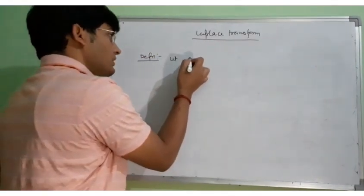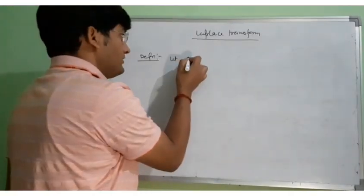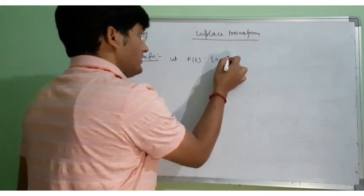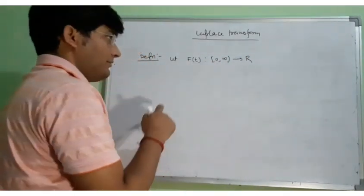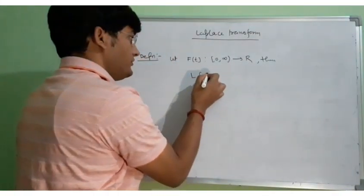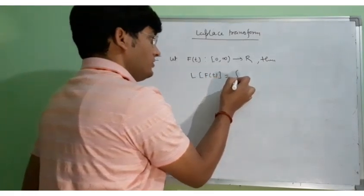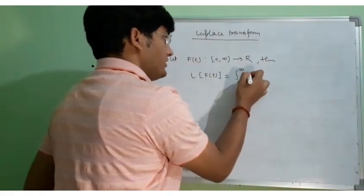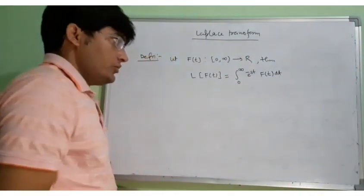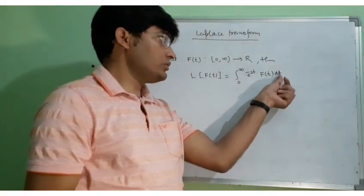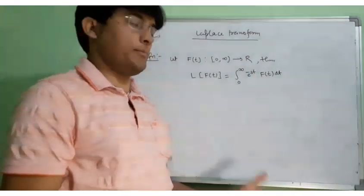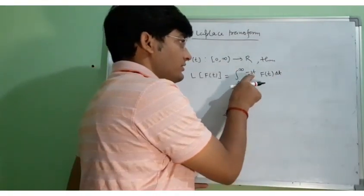Suppose that we have some function F(t) that is from 0 to infinity to R. Then the Laplace of F(t) is equal to the improper integral from 0 to infinity of e to the power minus st times F(t) dt. So we are integrating with respect to t, and there is a parameter S which can be real or complex, so our output will be in terms of S.